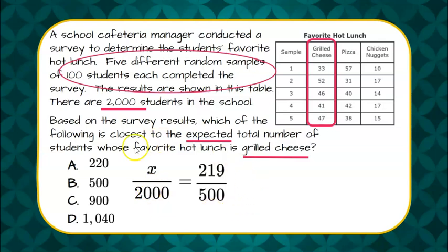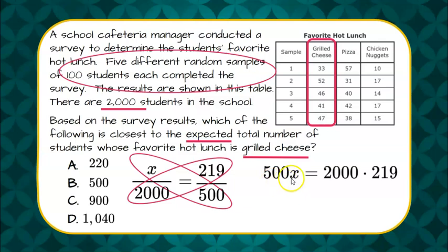So now I can use this to predict. I'm going to solve the proportion using cross product property. So 500 times x will equal 2,000 times 219. 500x equals 2,000 times 219. We are going to multiply 2,000 times 219 and divide both sides by 500 to get 876.